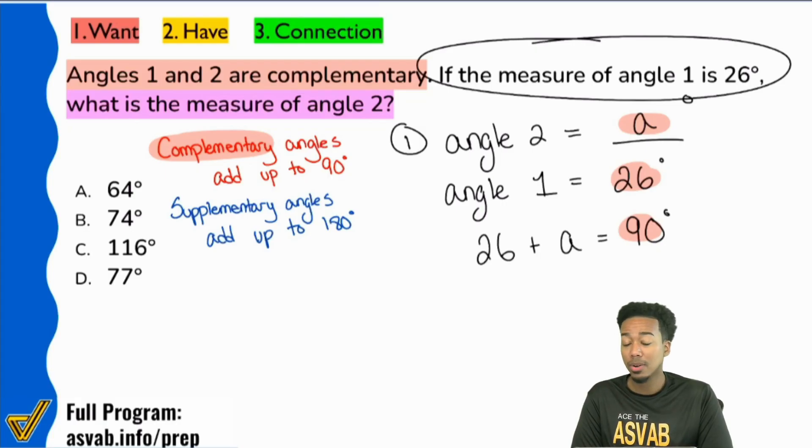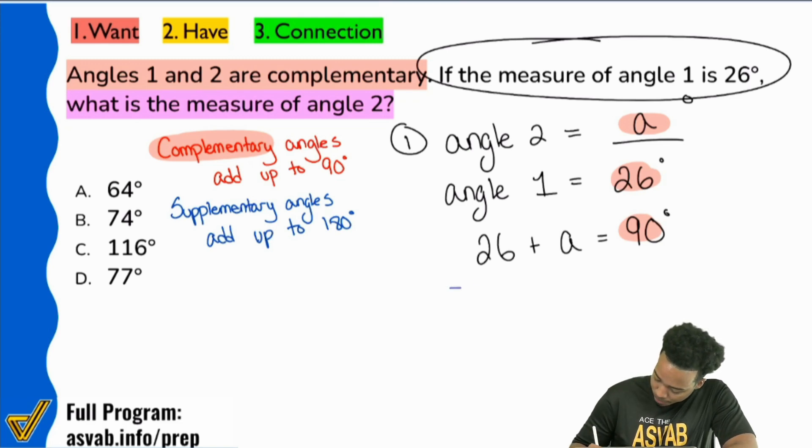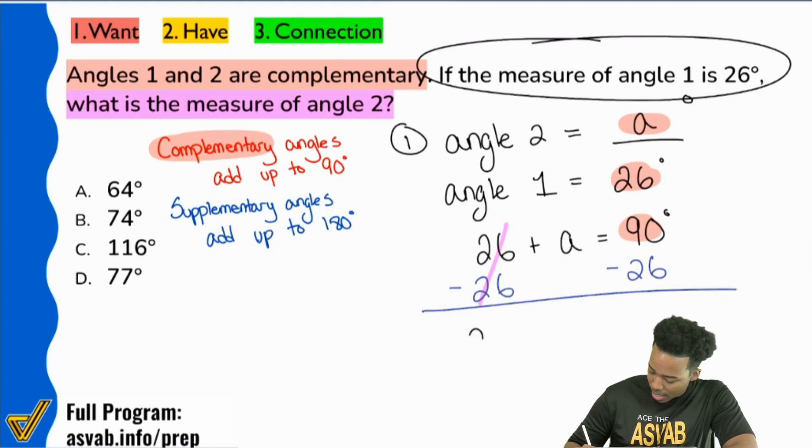And this is a very straightforward solution. If 26 plus A equals 90, let's get rid of that 26. So to get rid of it, we'll take it away. Let's subtract it. And that's going to give us what the answer is going to be. So we subtract. Bam. And that's going to be angle 2 equals. And that's going to be 64 degrees.